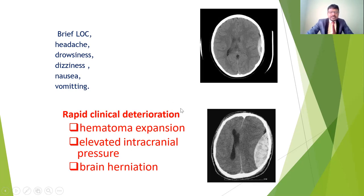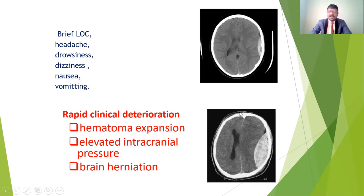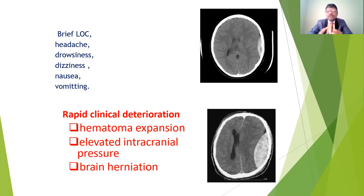Rapid clinical deterioration occurs with hematoma expansion, elevated intracranial pressure, and brain herniation. On CT scan, we can find the extent and check intracranial pressure and brain herniation. In those conditions, immediate surgery is needed. Depending on the severity, surgeons decide between craniotomy or burr hole technique, performing the surgical procedure according to the involvement and expansion.